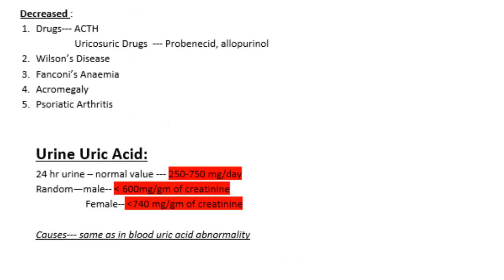Conditions where uric acid may be decreased include ACTH, uricosuric drugs, and diseases such as Wilson's disease, Fanconi's anemia, acromegaly, and psoriatic arthritis.